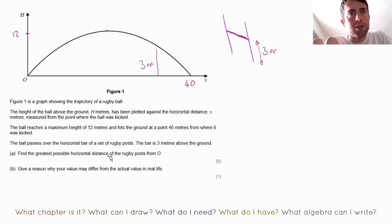Find the greatest possible horizontal distance of the rugby posts from 0. So these rugby posts that I've drawn don't need to be exactly where I drew them. They could be anywhere here as long as the ball goes over them. So the greatest distance is what we're looking for. We're looking for where it's there. Now you couldn't click and drag like I just did in an exam but you can imagine it and maybe you could draw different ones. The greatest possible distance. What do I need?